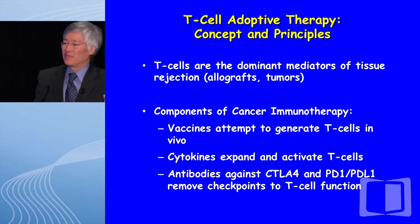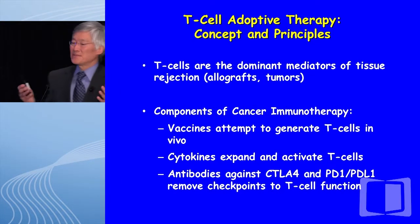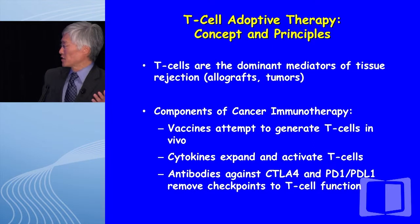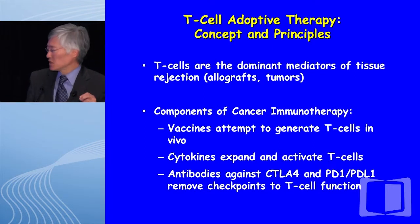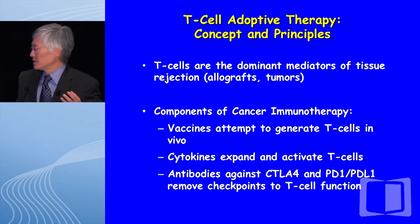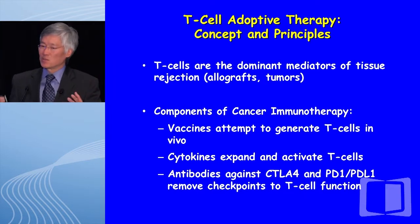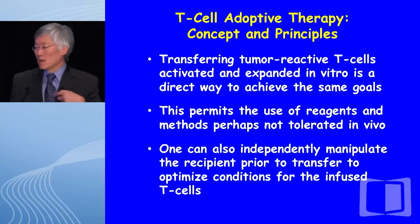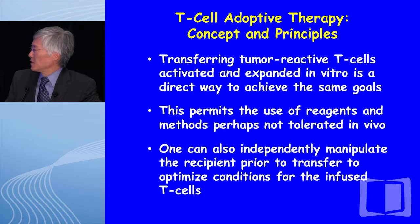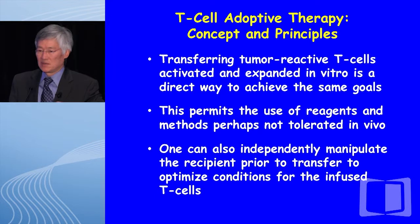The concept of T-cell adoptive therapy is pretty simple. T-cells are the predominant mediators of tissue rejection. In the initiation of this, we've used vaccines to try and generate T-cells. We've used cytokines to expand them, both in vitro and in vivo. And we've tried to remove the inhibitory checkpoints to allow their function to continue unimpeded. This is a paradigm for all the components that need to be combined to get the best tumor rejection. Transferring tumor-reactive T-cells expanded in vitro is a direct way to achieve some of these goals.